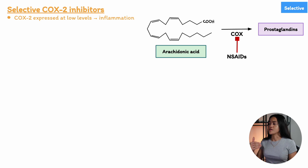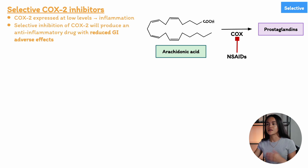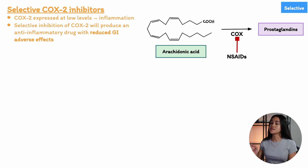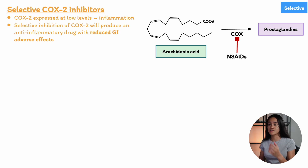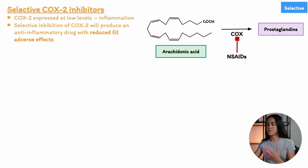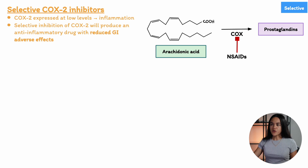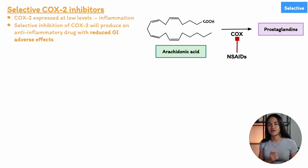This is where the development of selective COX-2 inhibitors came in. The idea was that COX-2 is primarily responsible for the anti-inflammatory effects, while COX-1 regulates functions like renal blood flow and the production of gastroprotective prostaglandins. The goal was to create a drug that selectively inhibited COX-2, so it could reduce inflammation with fewer gastrointestinal side effects compared to non-selective NSAIDs like aspirin and ibuprofen. Among the selective COX-2 inhibitors still available, celecoxib is the main example.